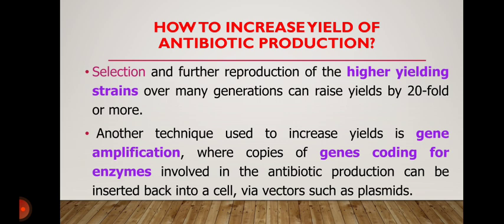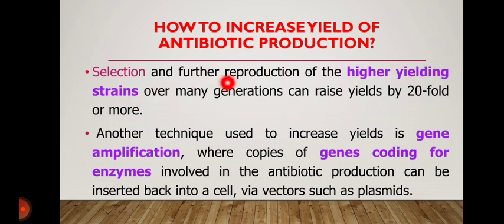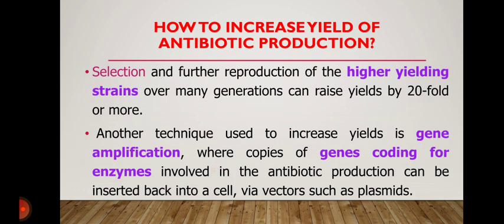To increase antibiotic production industrially, one method is choosing higher-yielding strains of molds or fungi. As I mentioned, Penicillium notatum was previously used but nowadays Penicillium chrysogenum, a higher-yielding strain, is used. Another method to increase yield is gene amplification, where copies of genes coding for enzymes involved in antibiotic production can be inserted back into a cell via vectors such as plasmids.